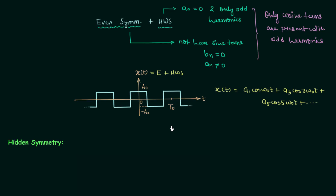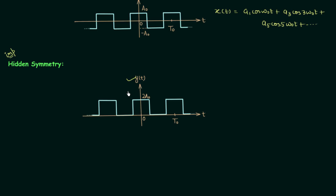Now we move to the next important type: hidden symmetry. We have completed different types of symmetries, and here we deal with symmetries that are hidden. To understand how to deal with hidden symmetry, we take one example. A waveform of signal Yt is given and we are required to find its trigonometric Fourier series expansion, with four options provided. The direct process is lengthy and unsuitable for objective questions, so we focus on properties and symmetries.